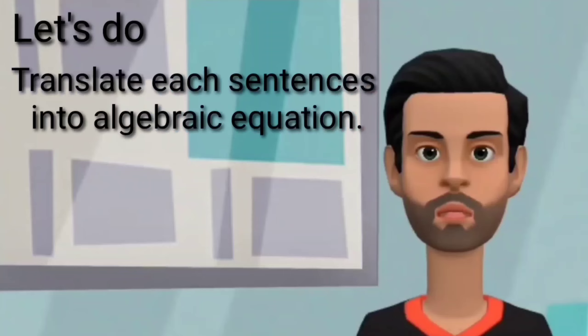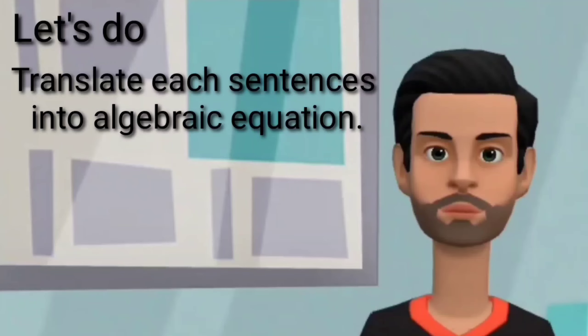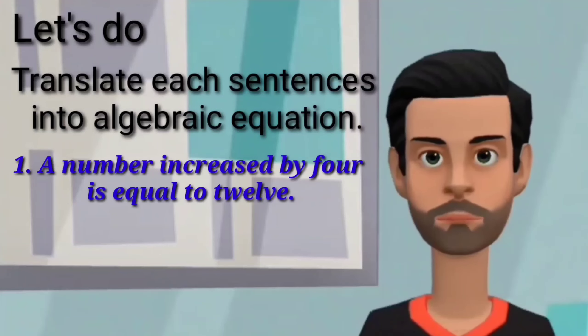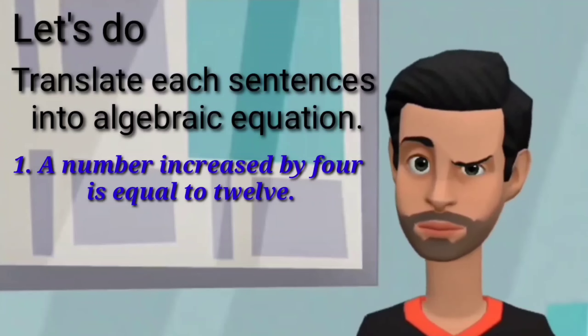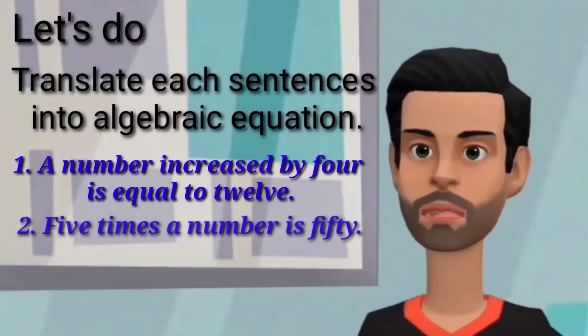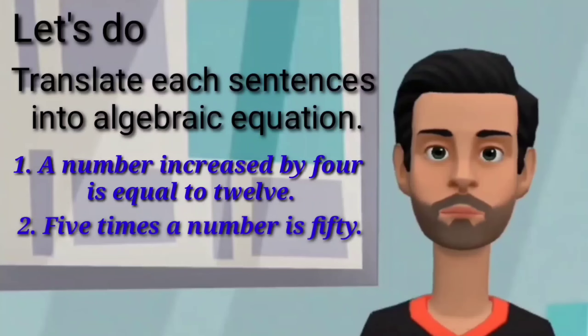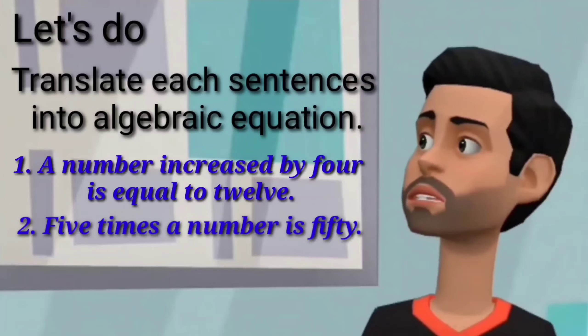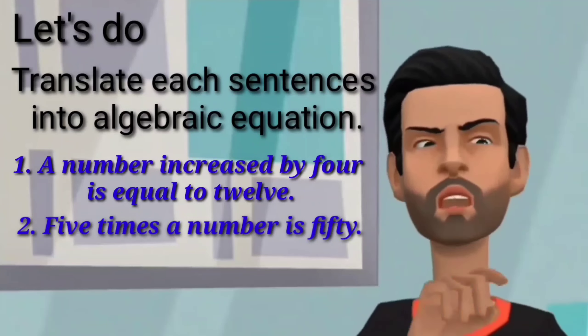Let's do this. Translate each sentence into an algebraic equation. Number one: a number increased by four is equal to twelve. Number two: five times a number is fifty. Times up.